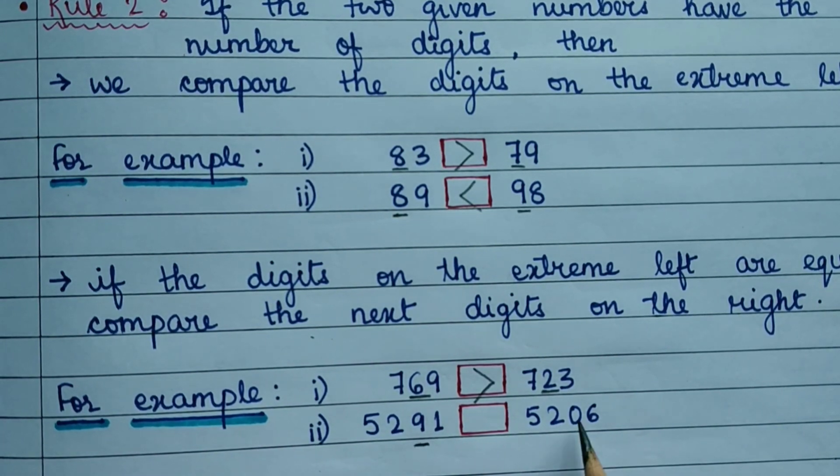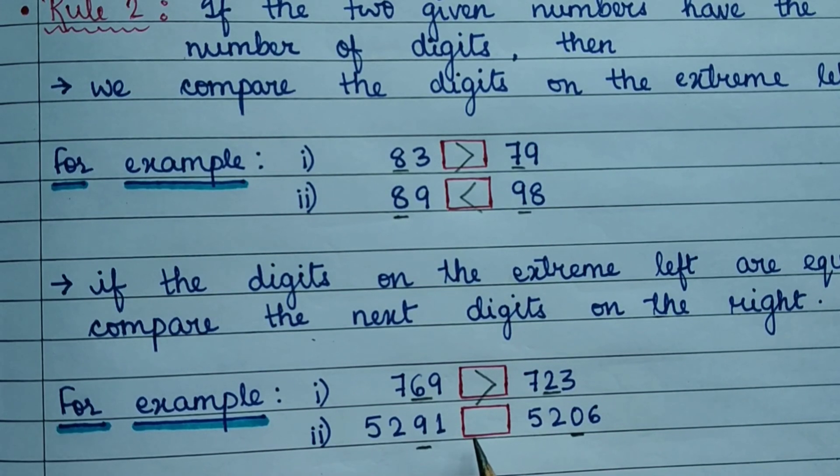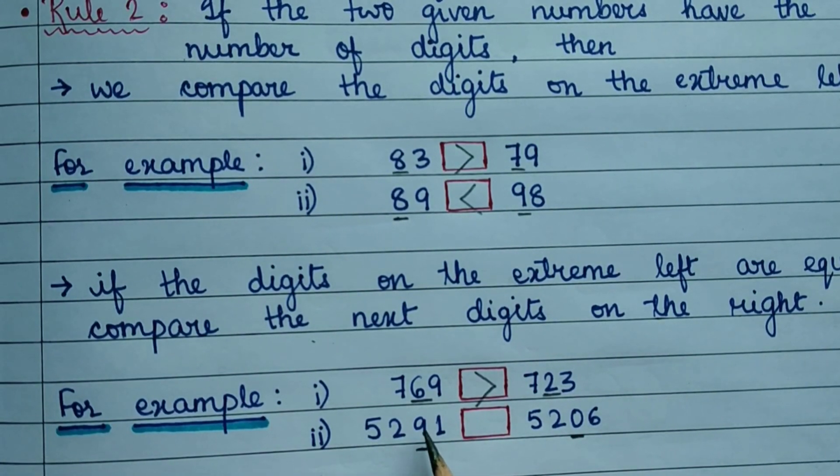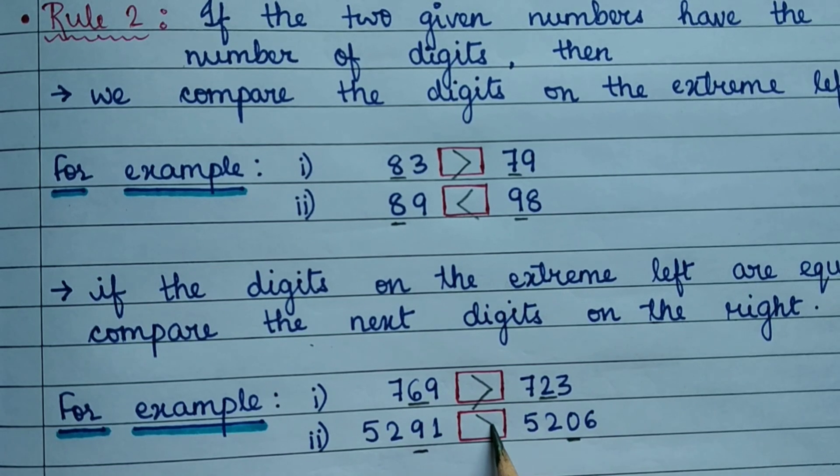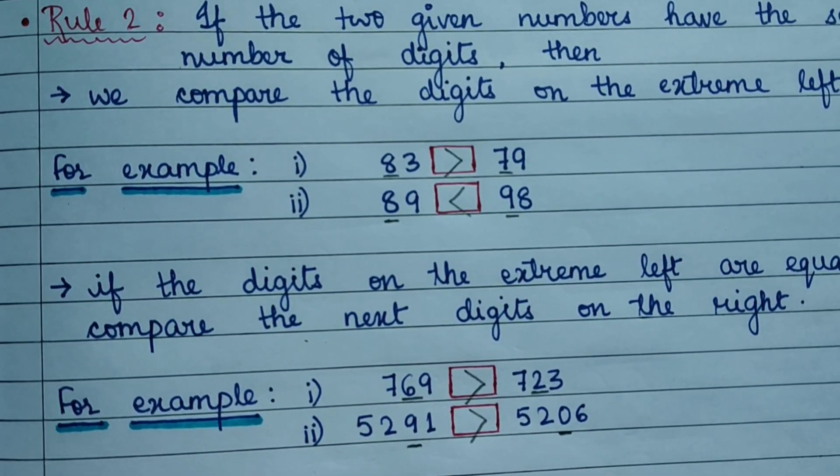Then we will compare the digit to the right of 2. 2 ke right side waal digits ko compare karengi. We will compare 9 and 0. Since 9 is greater, the number 5291 will be greater.